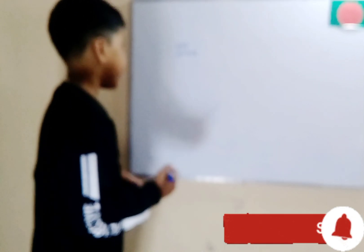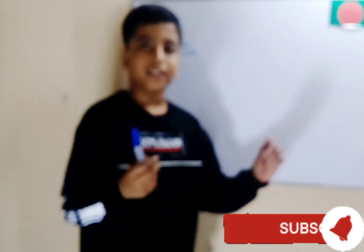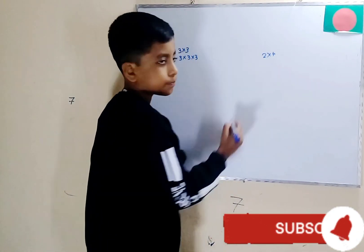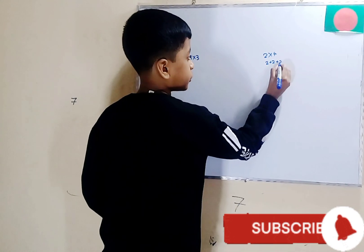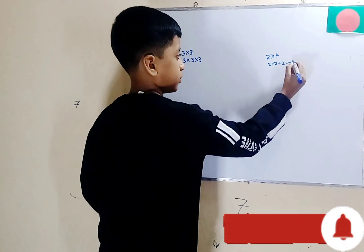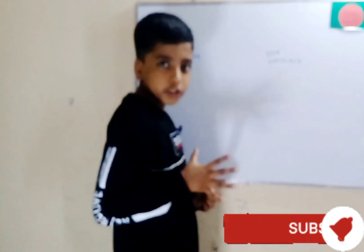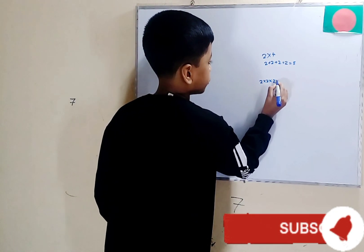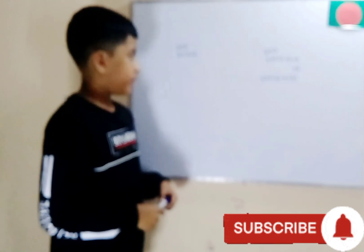There is one, and that's exponents. Exponents are to multiplication what multiplication is to repeated addition. Like two multiplied by four means two plus two plus two plus two, which equals eight. But two to the power of four equals two times two times two times two, which is 16.